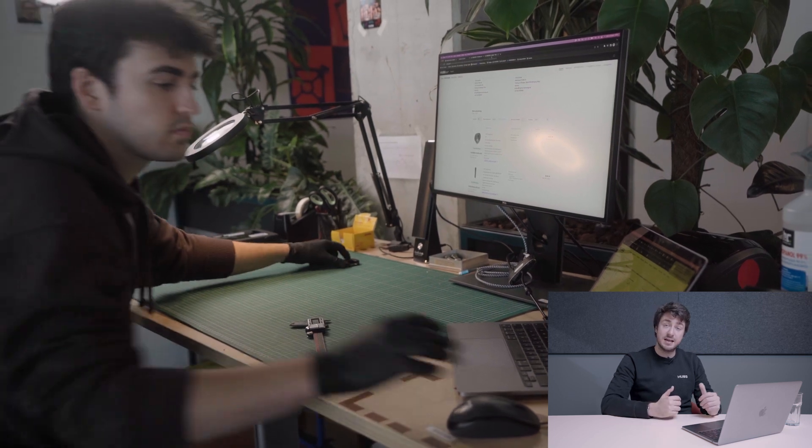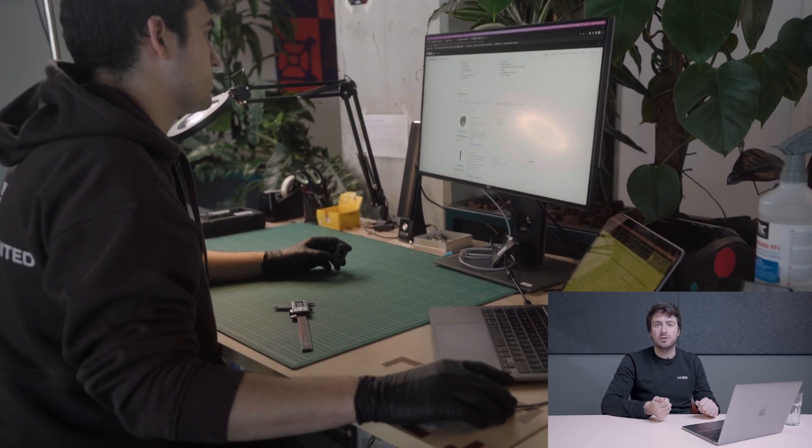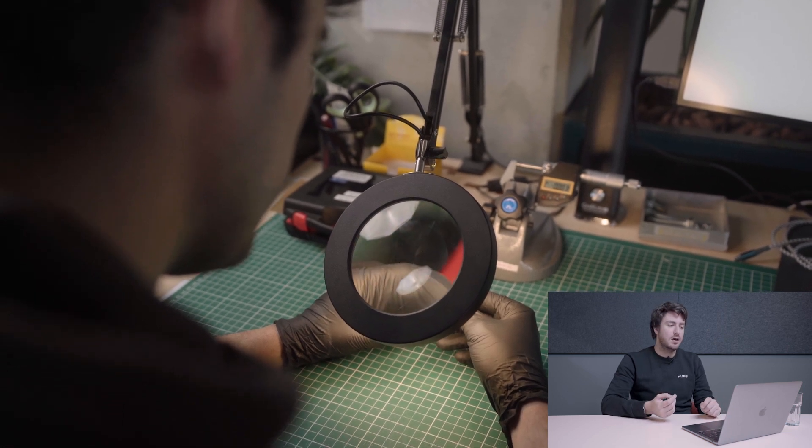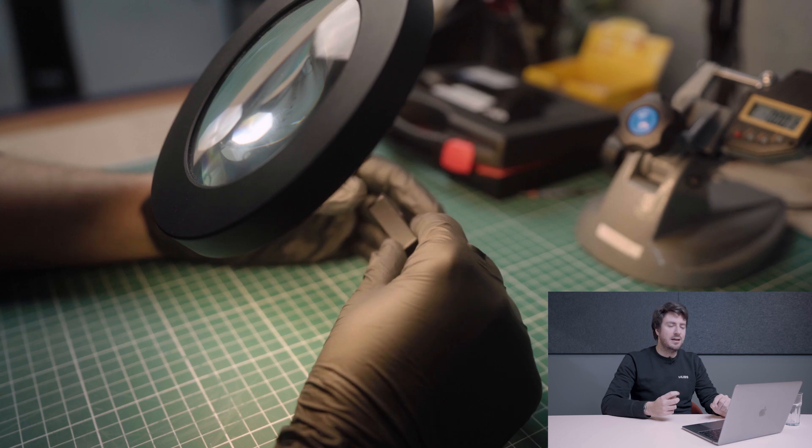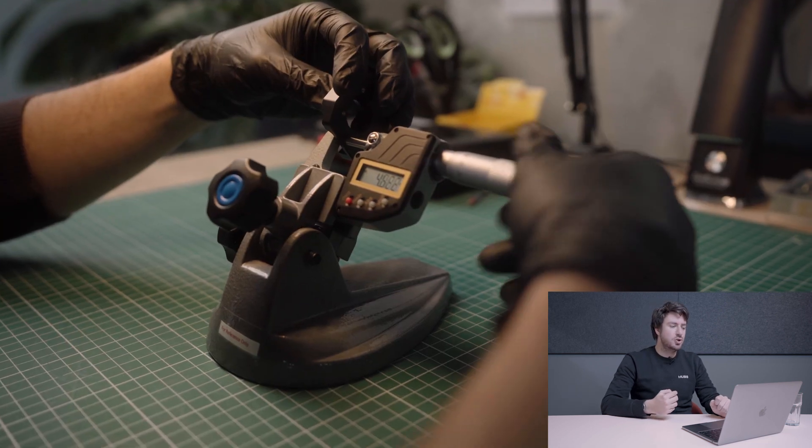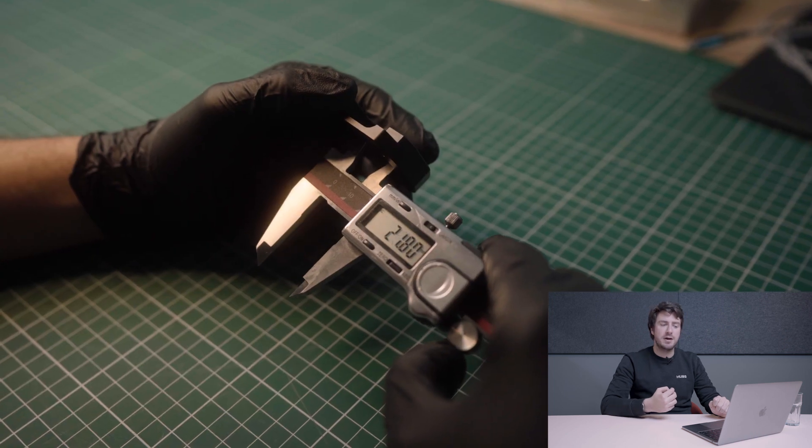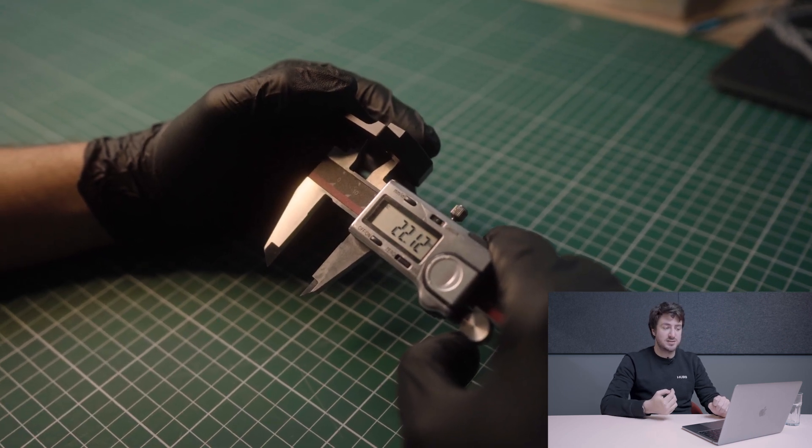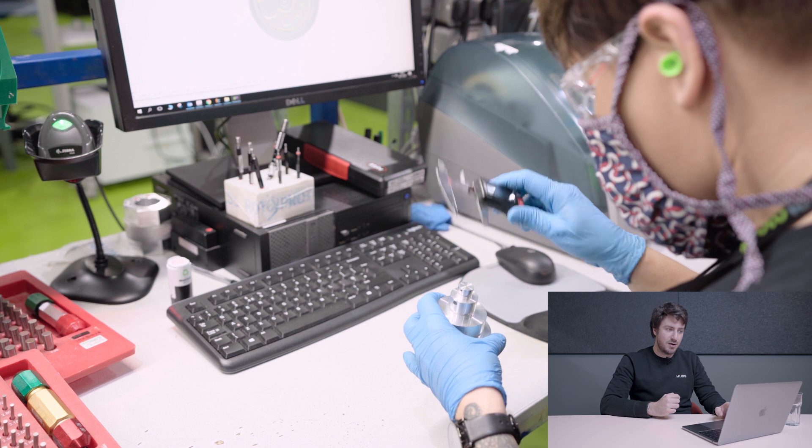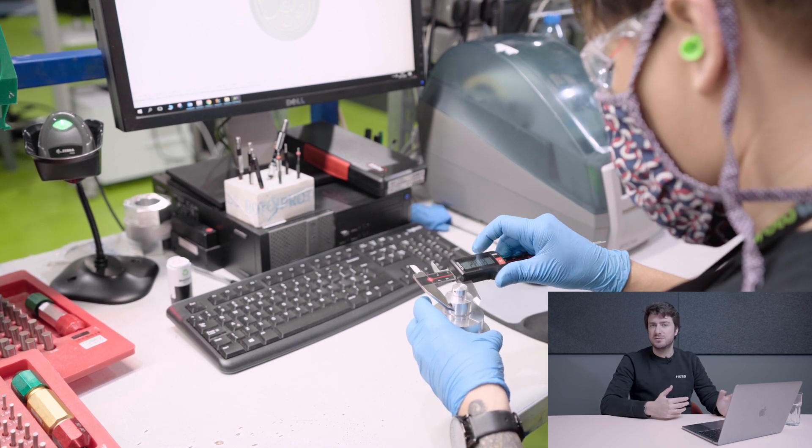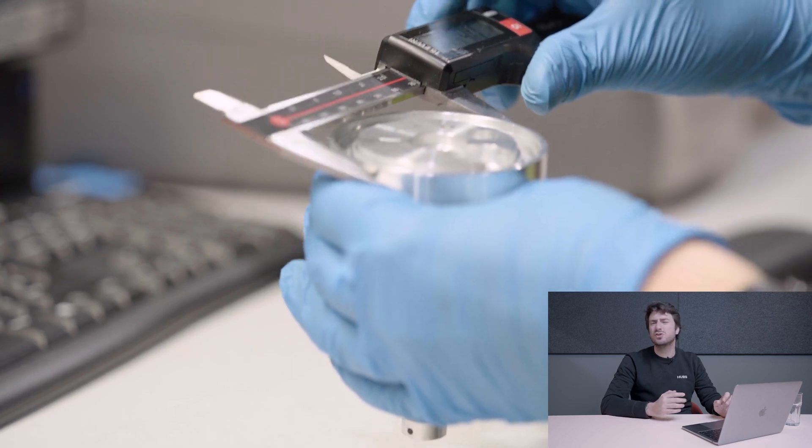Once the part is machined and is then deburred it undergoes quality control and this one as well can be both manual or automatic. Manual QC is the most common one and definitely the cheapest one. It relies on humans to use micrometers and calipers most likely digital in order to manually measure specific features that we're interested in. While it is the cheapest however, micrometers and calipers are relatively expensive. They have an accuracy of plus or minus five microns which is good enough for most uses.